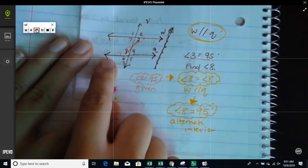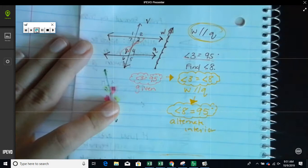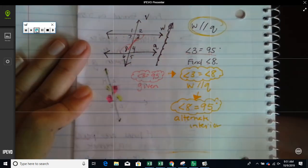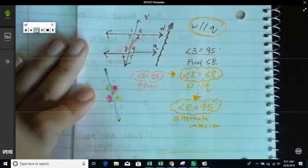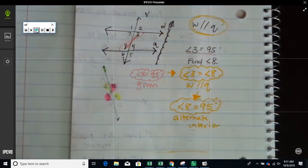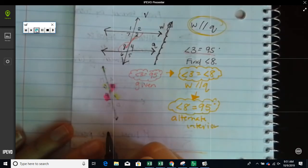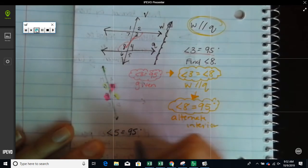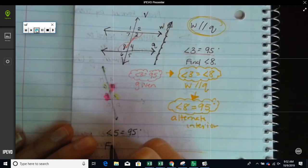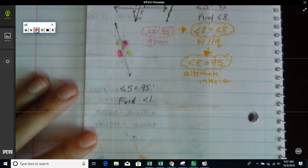So what I'm going to have you do is if you have not taken the notes, I'm going to have you draw this. You can click pause on the video, but it's in the video right before this one. And so, for this example, it's going to tell you that angle 5 is equal to 95 and it's going to say find angle 1. Please copy that for page 22.